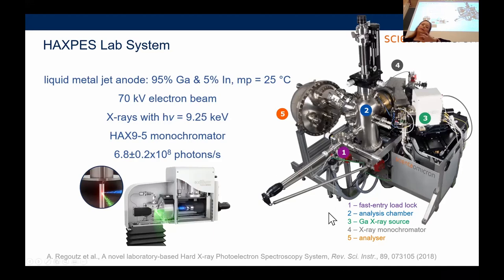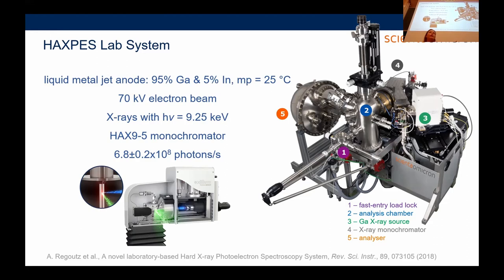The two main lab-based HAXPES sources available are chromium K-alpha (~6 keV) and gallium K-alpha (~9 keV), which you can now purchase commercially. Those suppliers will also sell you aluminium K-alpha, so in the lab you can now combine soft and hard X-rays in a single system away from the synchrotron. You can already see the number of HAXPES papers increasing and access for test measurements going up — a real change in pace and uptake of the technique.